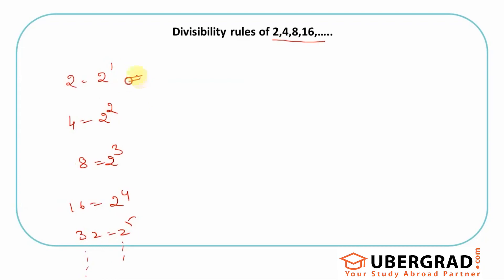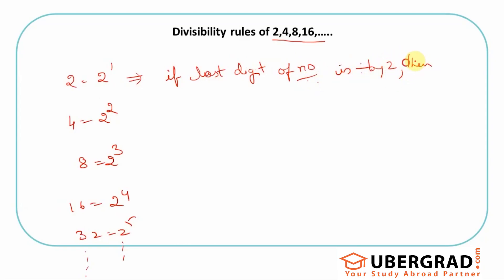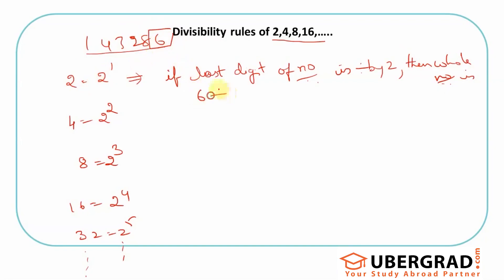The divisibility rule of 2: if the last digit of the number is divisible by 2, then the whole number is divisible by 2. For example, take the number 143286. I'll focus on the last digit. 6 is divisible by 2, so the whole number 143286 is divisible by 2.